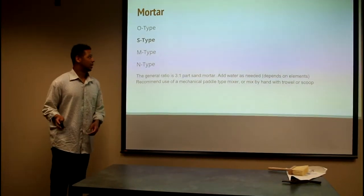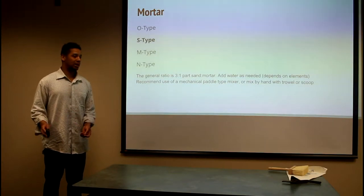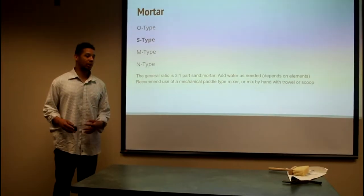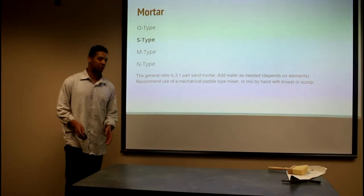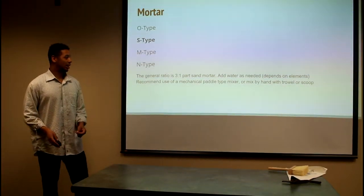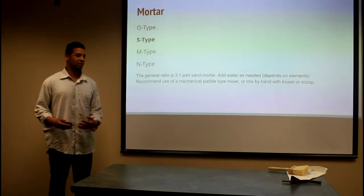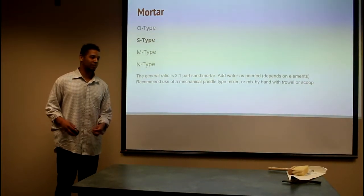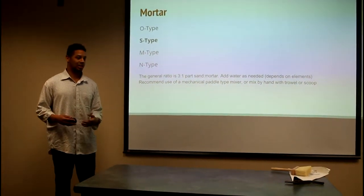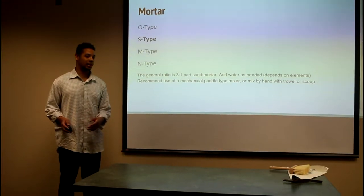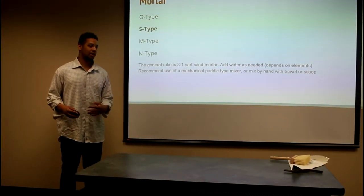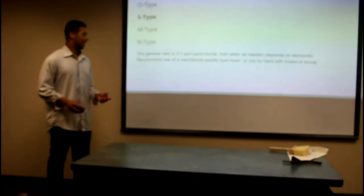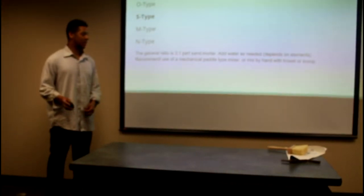For mortar, we're going to use the S-type. This is the primarily used mortar for brick structures. And the water you add will depend on the elements. We're going to grab a bag of S-type plain white mortar and white sand, and you're going to add as much water as you need. Sometimes the mortar dries a little quicker. If it's really hot outside, you're going to add more water. If it's really wet and damp in the morning, you're going to want to add less water. It depends on the elements.